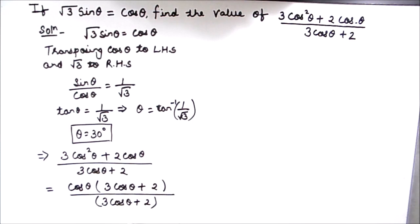So this 3 cos theta plus 2 and 3 cos theta plus 2 gets cancelled. We are only left with cos of theta.